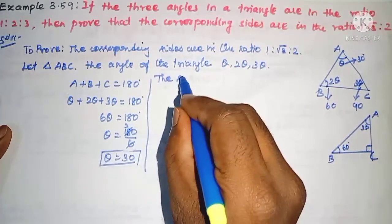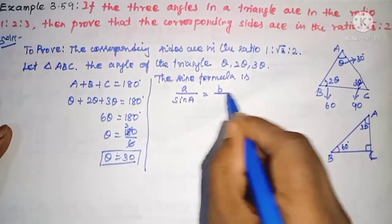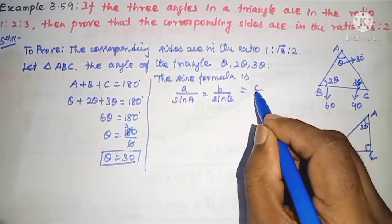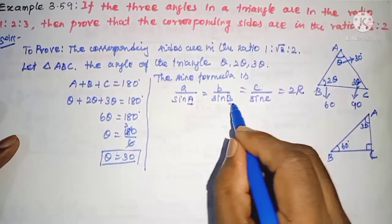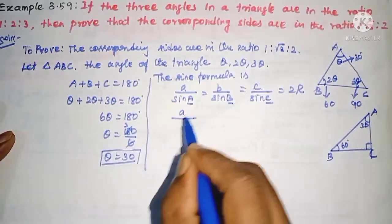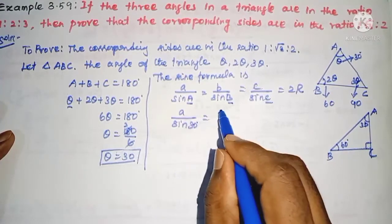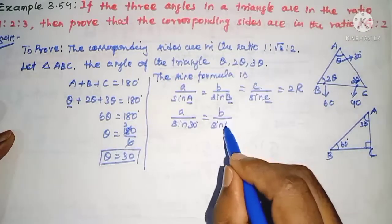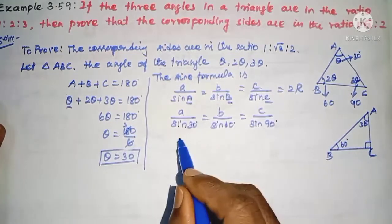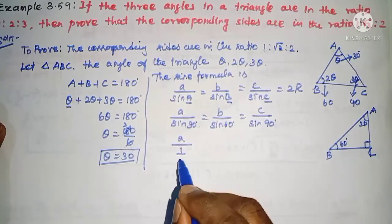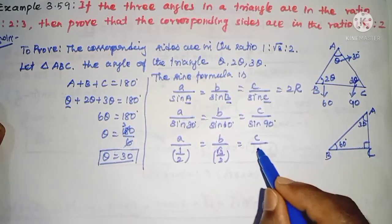We will use the sine formula. The sine rule is: a/sin A = b/sin B = c/sin C = 2R. Now we find a, b, and c using the corresponding angles: A = 30°, B = 60°, C = 90°. So a/sin 30° = b/sin 60° = c/sin 90°, which gives a/(1/2) = b/(√3/2) = c/1 = 2R.